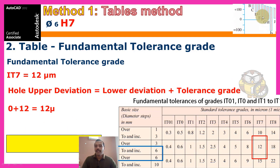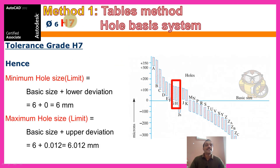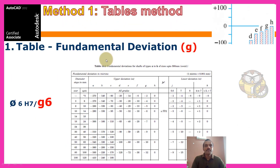This is the H zone: higher deviation is upper deviation, lower deviation is 0, and higher deviation is 12. For H7, the maximum limit is the basic size plus the upper deviation — that gives the maximum hole size. Using the table method, that is straightforward.